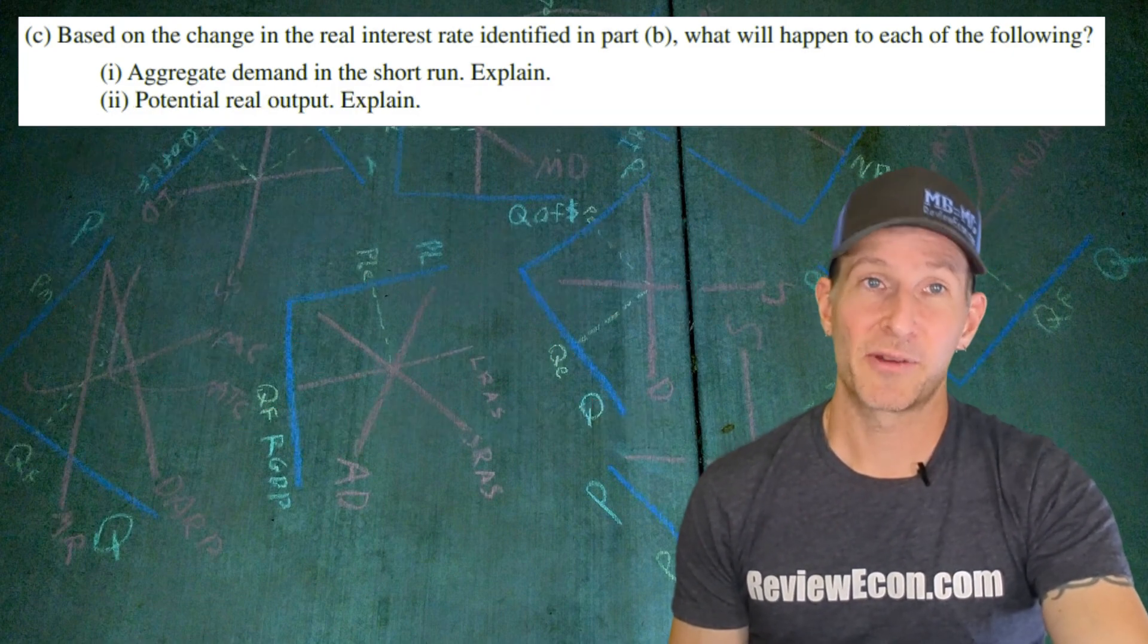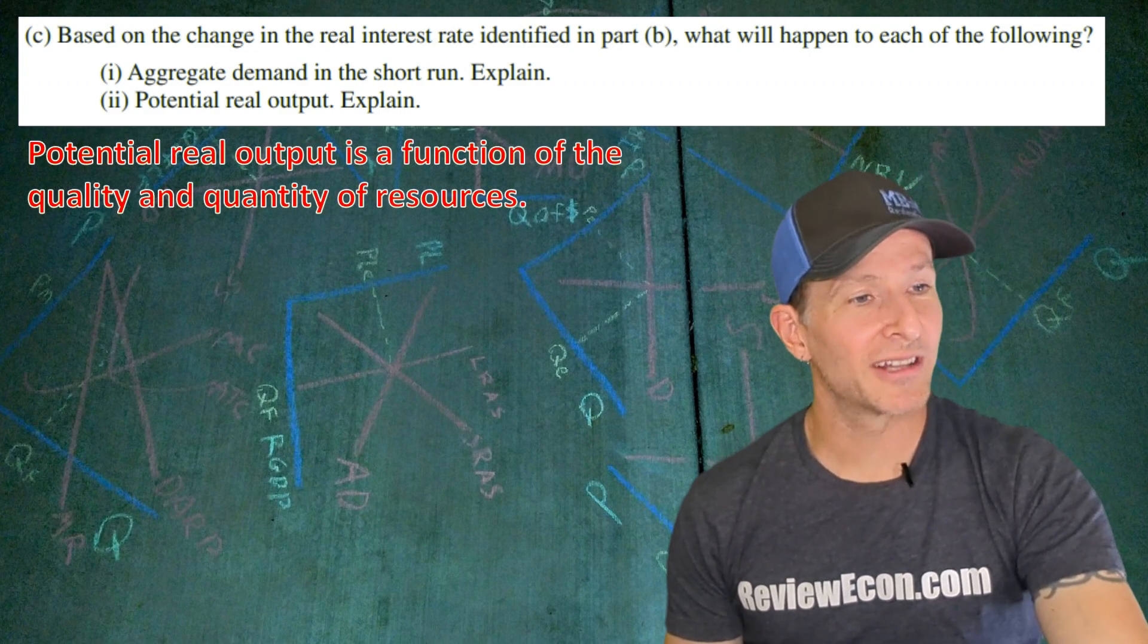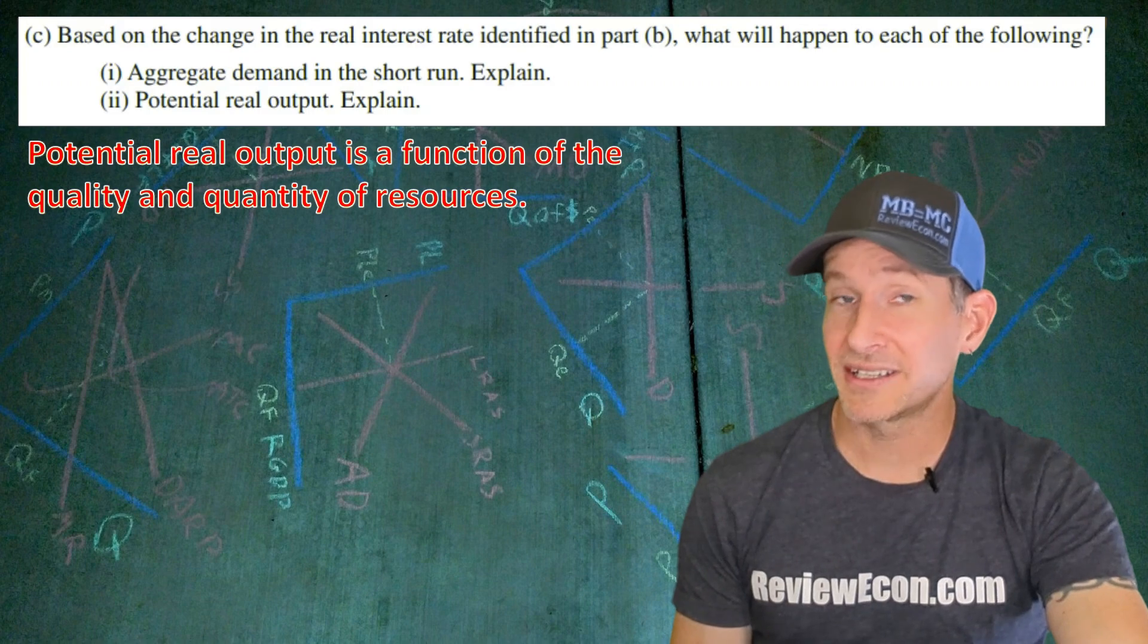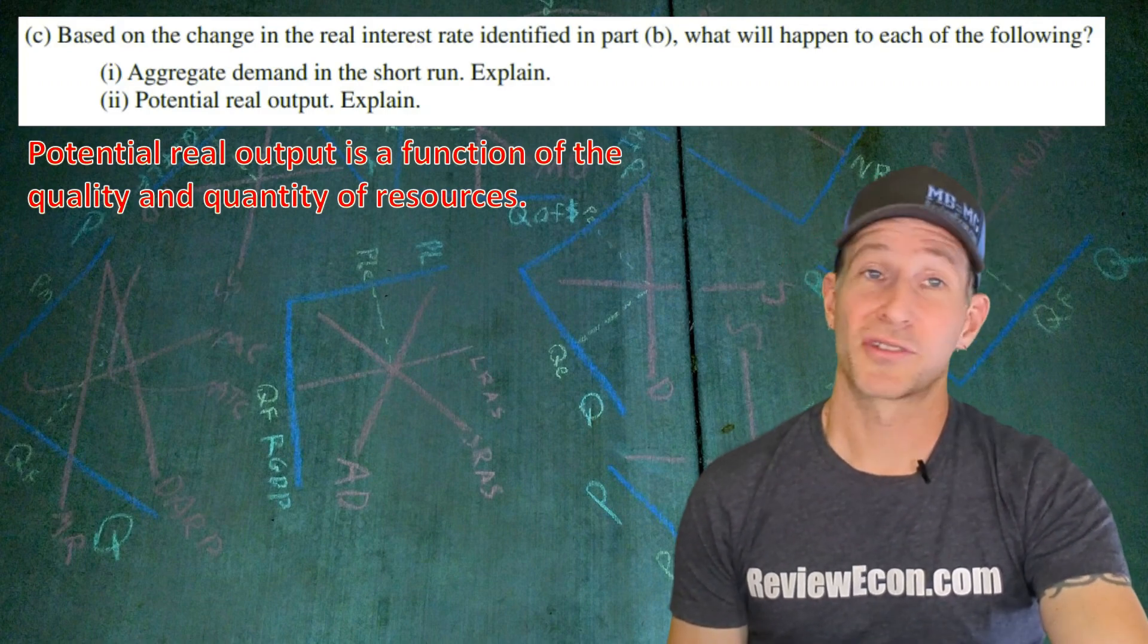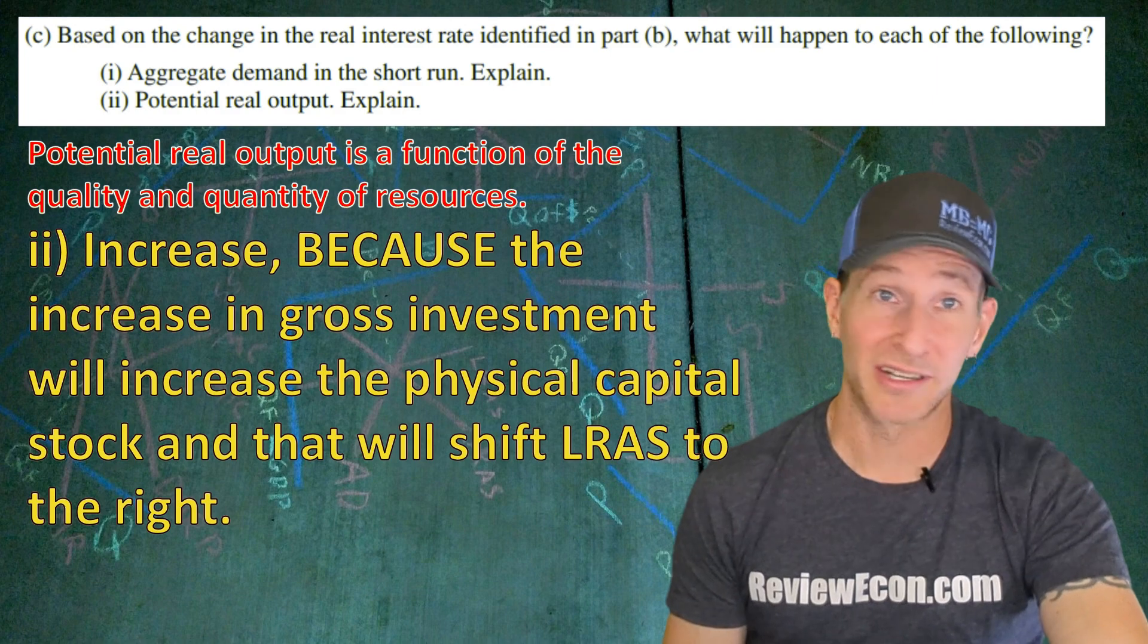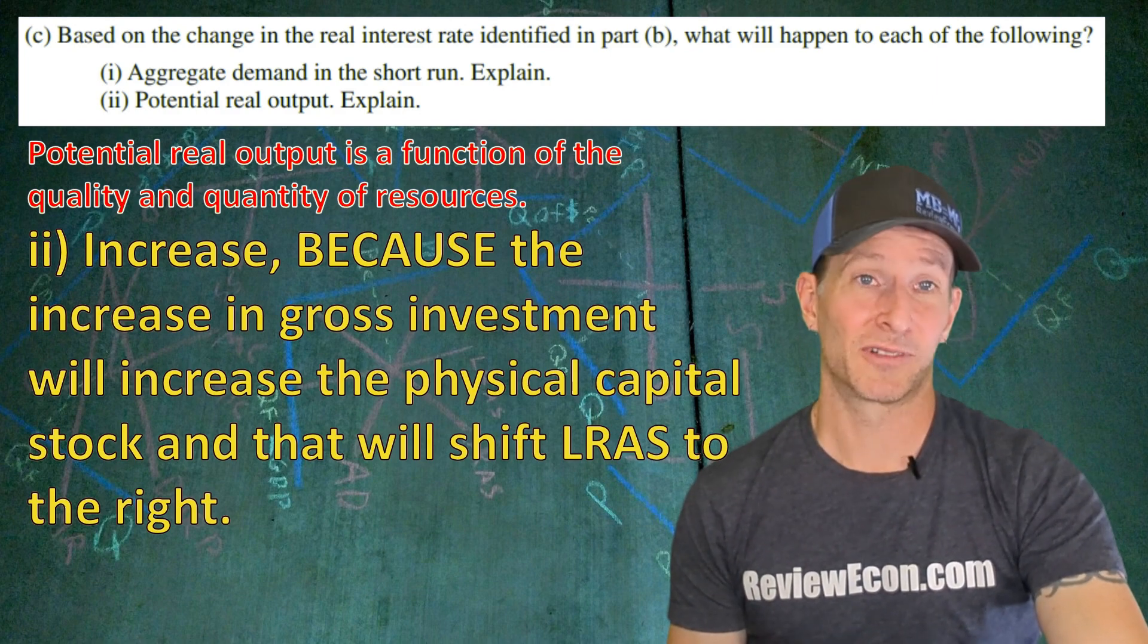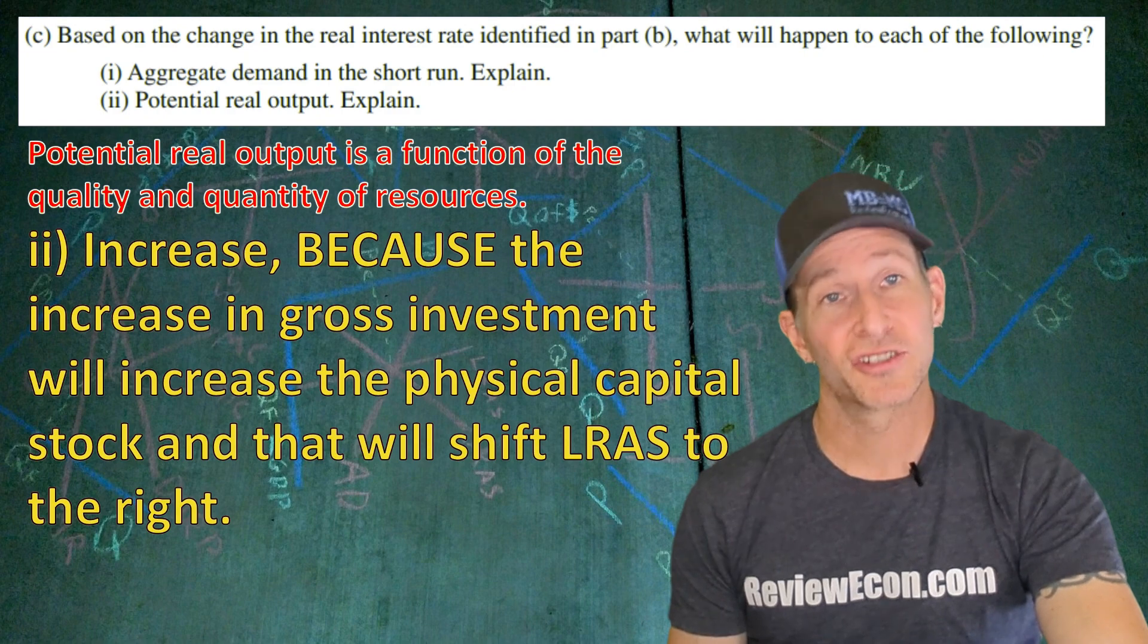For part C double I, we have to explain the impact on potential real output. And it's going to be helpful to remember that potential real output is a function of the quality or quantity of resources. So that leads us to the answer here, increase, because the increase in gross investment will increase the physical capital stock and that will lead to a long run aggregate supply curve shift to the right.